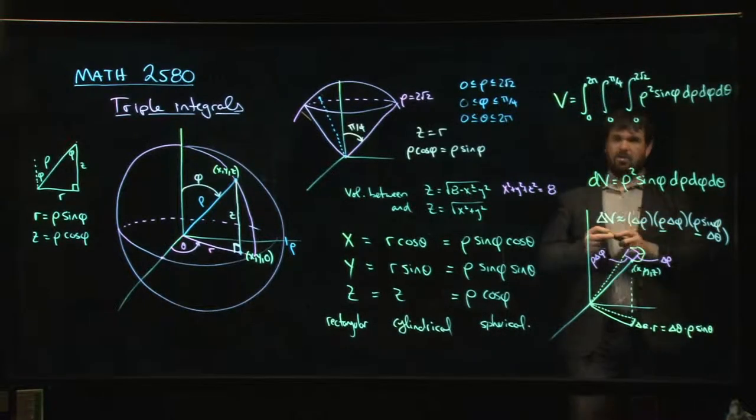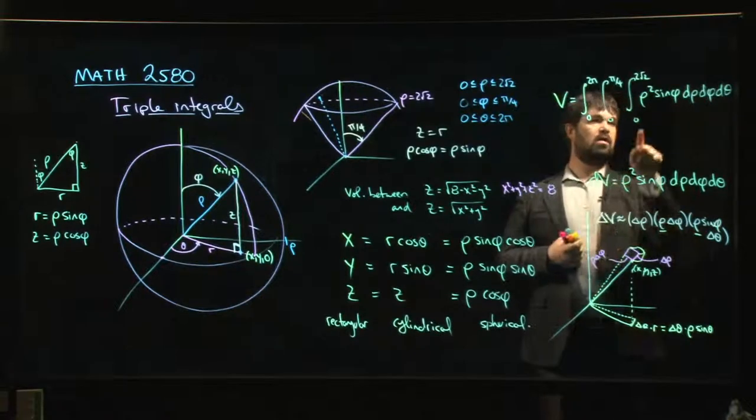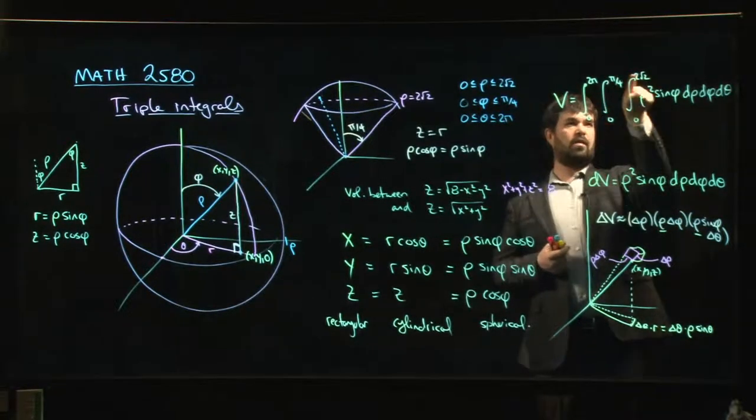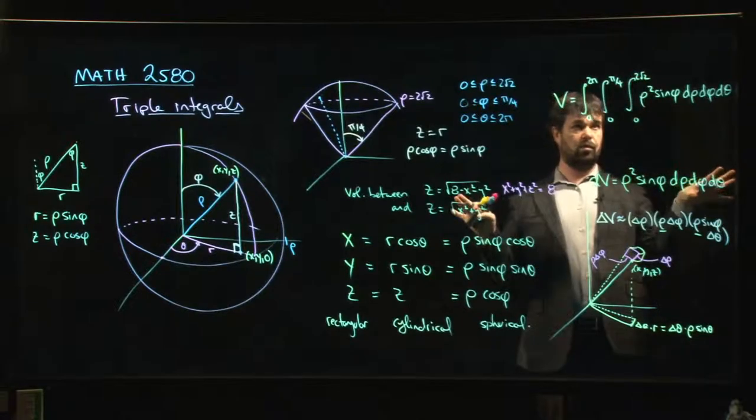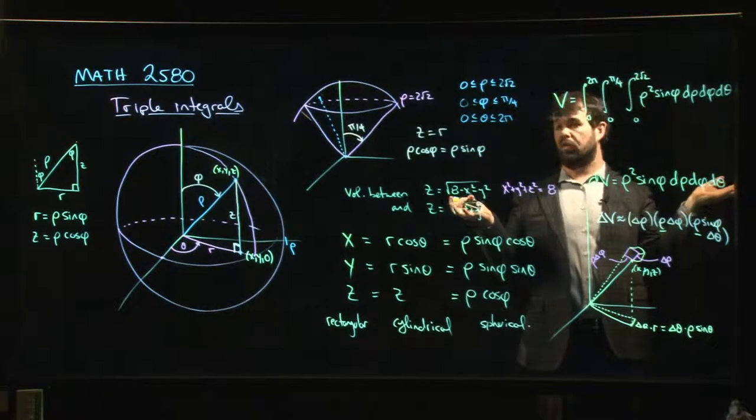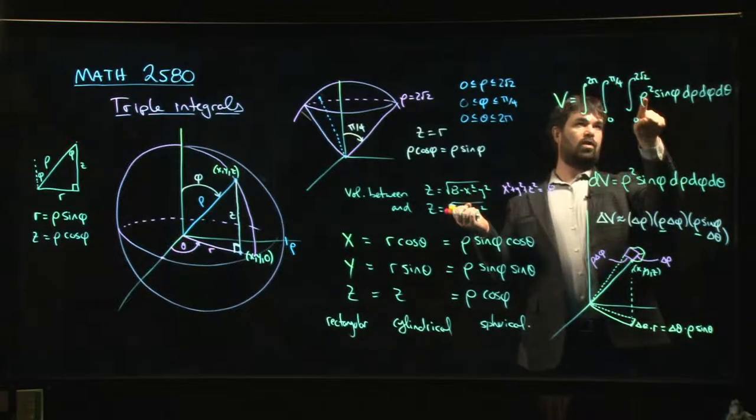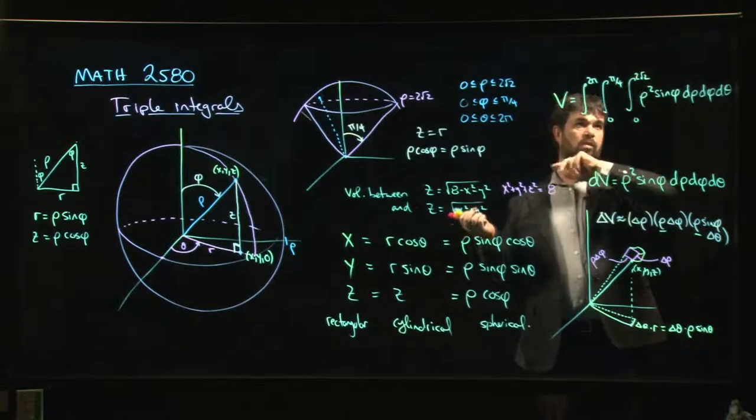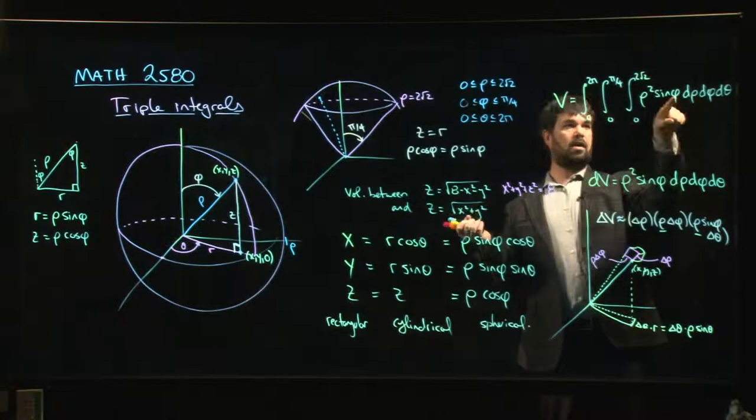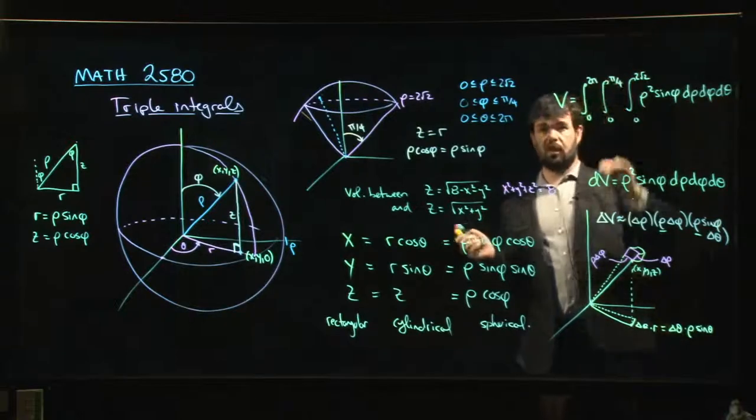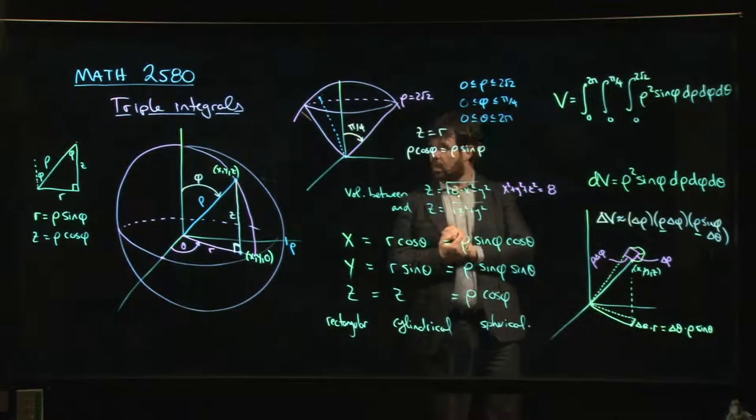I'll let you take it from there. It's not too bad because you can split things up. You can do the rho integral first because notice that everything here is constants, right? So you're essentially integrating over like a box. So 1 third rho cubed, you plug in the 2 root 2 for that. Antiderivative for sine is going to be negative cos. You put in the bounds there. Theta, well, that's just going to give you that multiple of 2 pi. And then you've got it done.